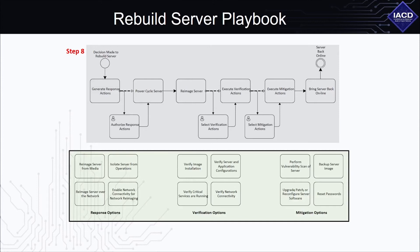Step 8: Identify the end state, or alternatively an initiating condition to another playbook. Ask yourself does this playbook result in a discrete end state? Could this playbook initiate a different or complementary playbook? The playbook should not end with ambiguity. Also, the playbook which this current playbook initiates may not even exist yet, and that's okay — use this guide to make as many playbooks as you need. In this case, the end state is that the server is back online.